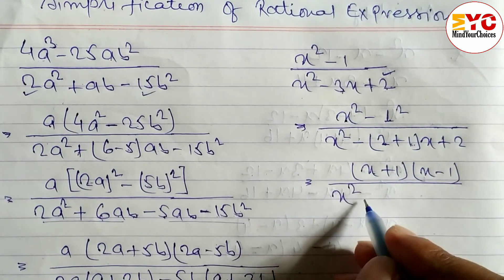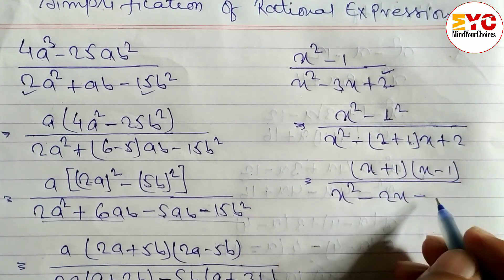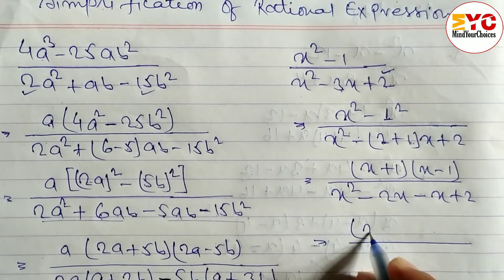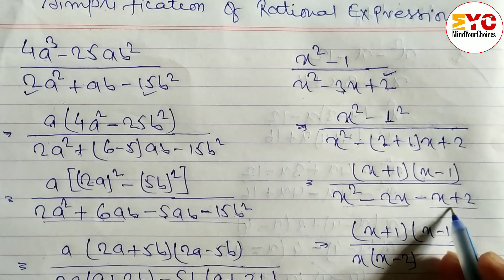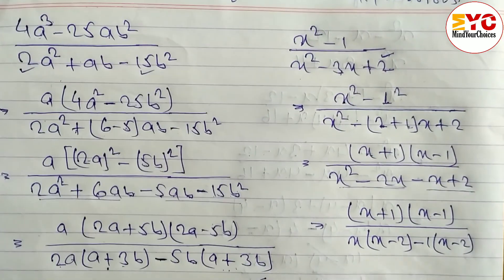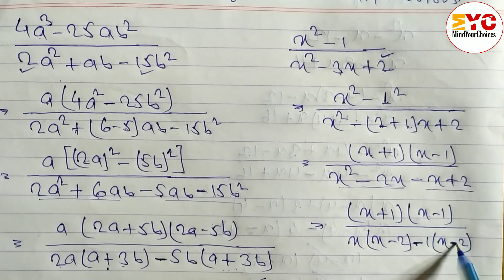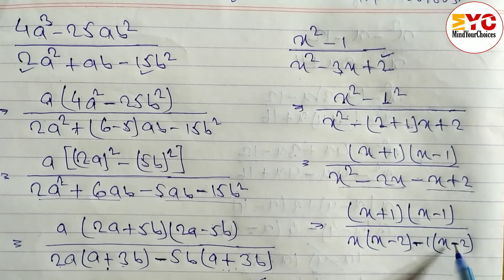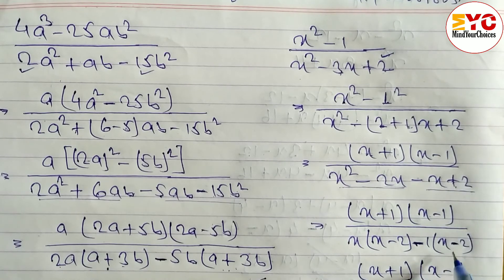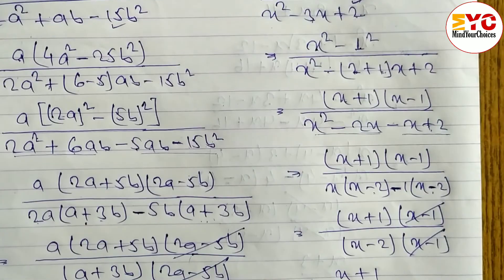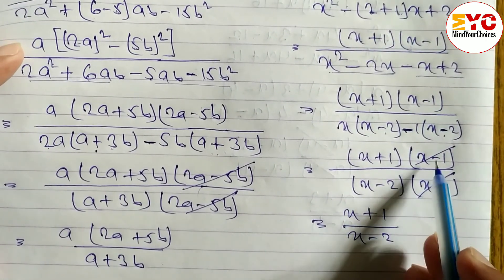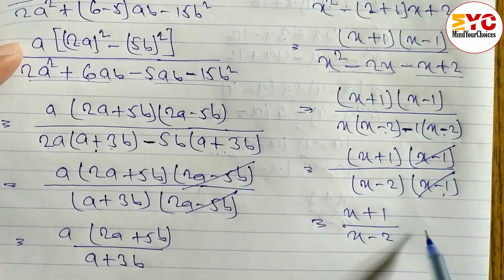In the denominator, open the bracket: x²−2x−x+2. Take common: from x²−2x take x common, remaining x−2; from −x+2 take −1 common — change the sign — remaining x−2. So denominator is (x−2)(x−1). Now (x−1) cancels with (x−1). The remaining answer is (x+1)/(x−2).